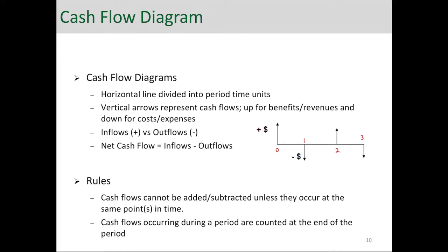The other key element are the vertical arrows here. There are upward arrows and downward arrows. Upward arrows represent benefits, revenues, any inflow of cash. And the downward arrows are negatives, basically outflow of cash, expenses, costs.